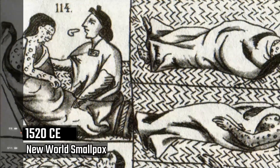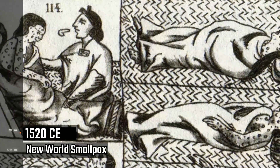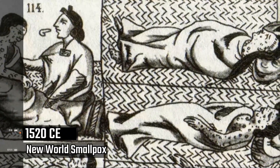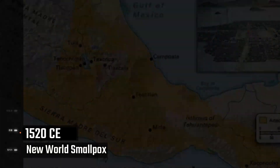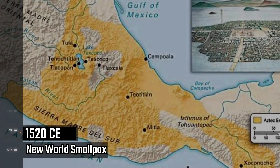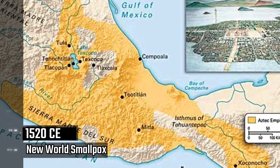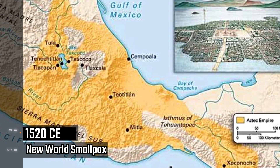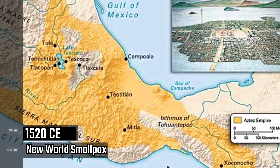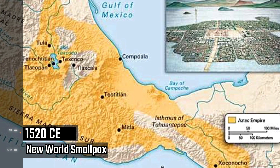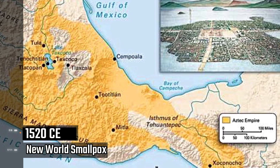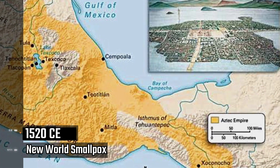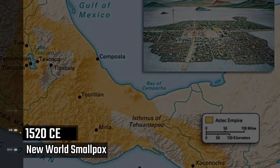New World Smallpox Outbreak, 1520 onwards. The first recorded smallpox epidemic in the New World was in 1520, when it spread to Mexico and through South America. The epidemic killed a third or more of the population in just a few months. Because the smallpox epidemic killed so many, no one wanted to take the blame for spreading it. The variola major virus is estimated to have claimed 56 million casualties.